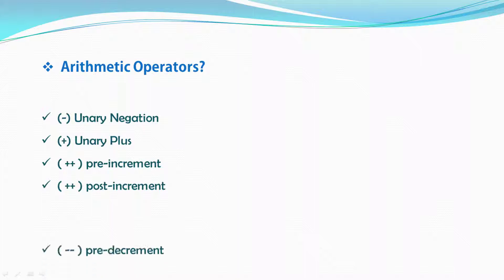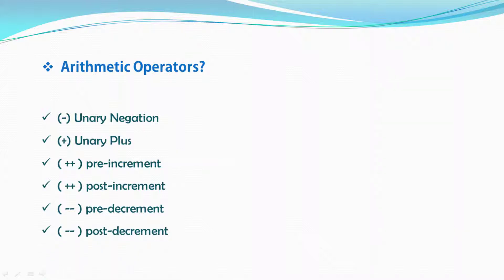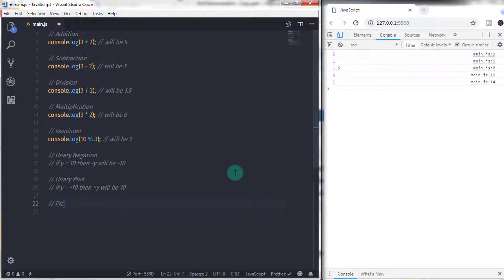We also have the pre-decrement operator — used to decrease a value by one and evaluate to the new value. This operator evaluates right to left. Post-decrement is used to decrease a value by one and evaluate the value of y before the decrement. This operator evaluates right to left. That covers all the arithmetic operators.